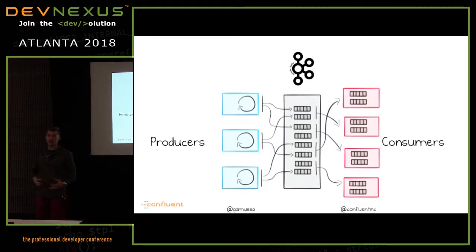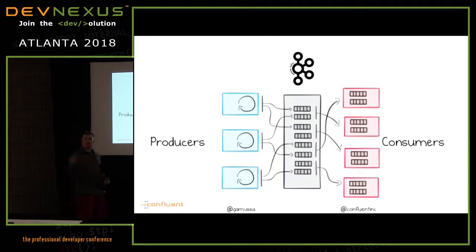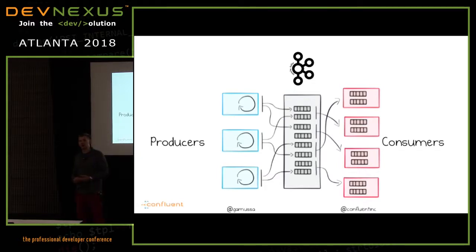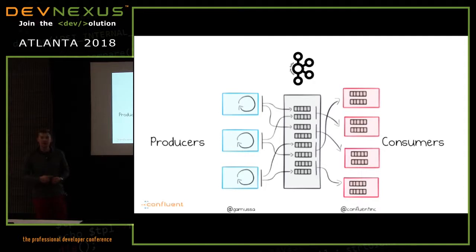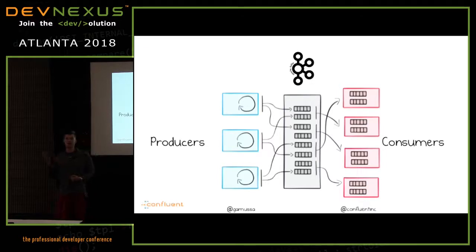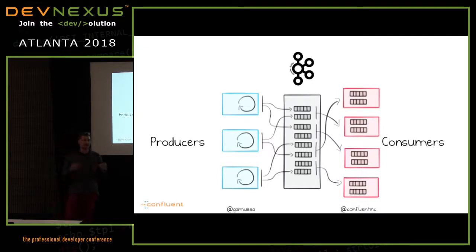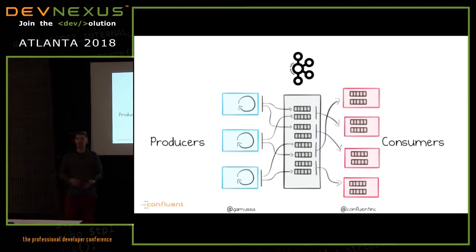Yesterday I gave an introduction to Kafka as a streaming platform. You now know we can push bytes back and forth using Kafka — it's safe, fault-tolerant, scalable, and amazing. Today's talk is about how you're going to be processing that data, and since this is a developer-oriented audience, I'm going to focus on some Java goodies.